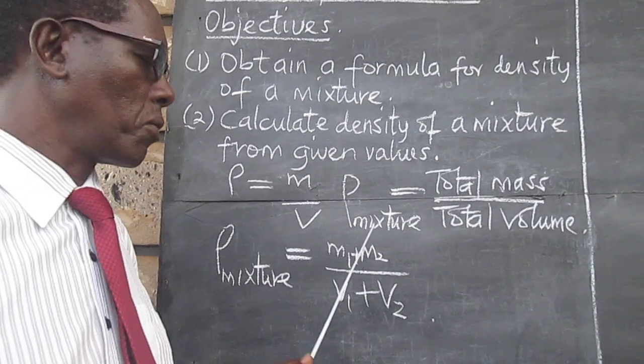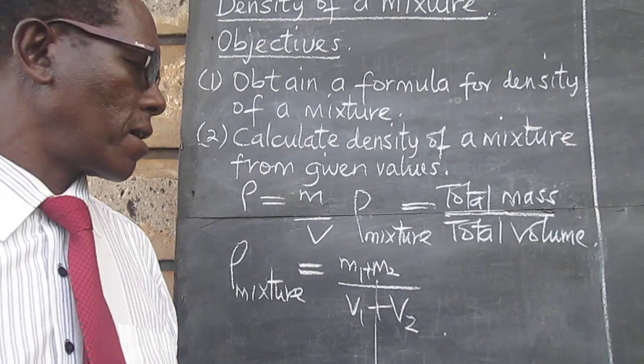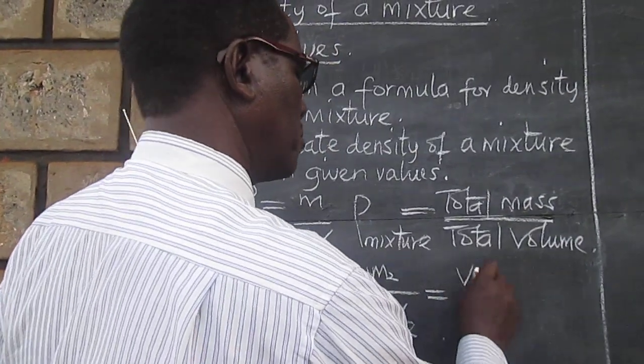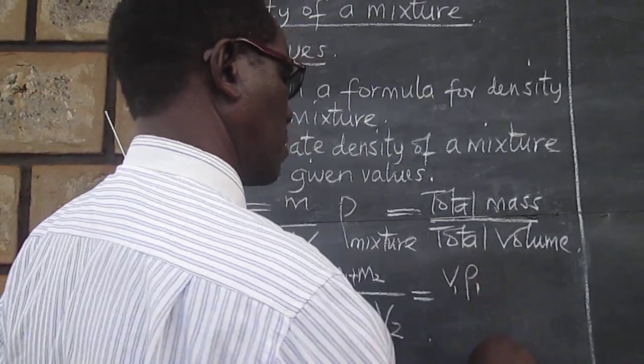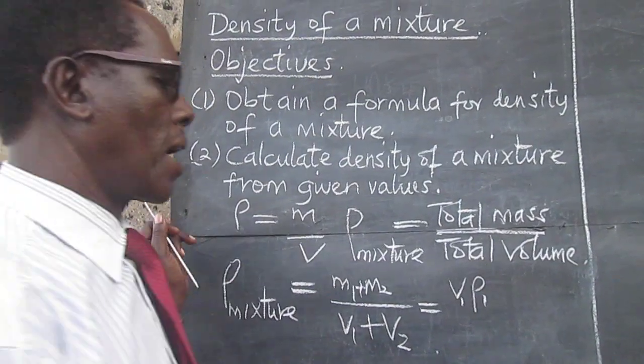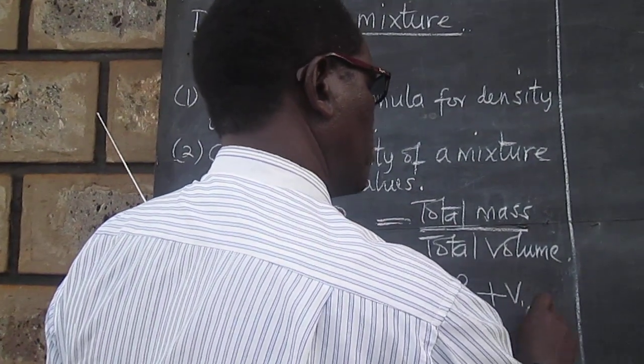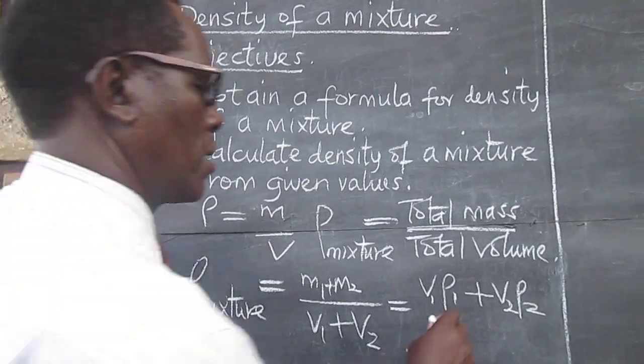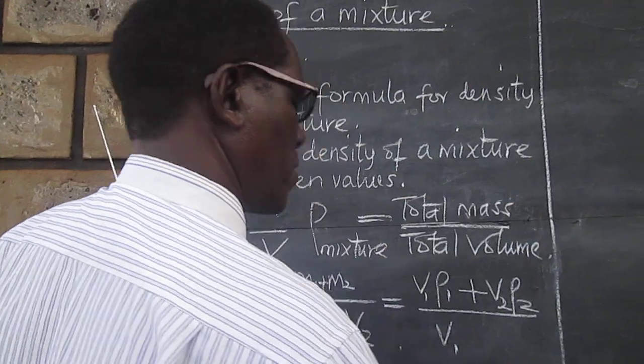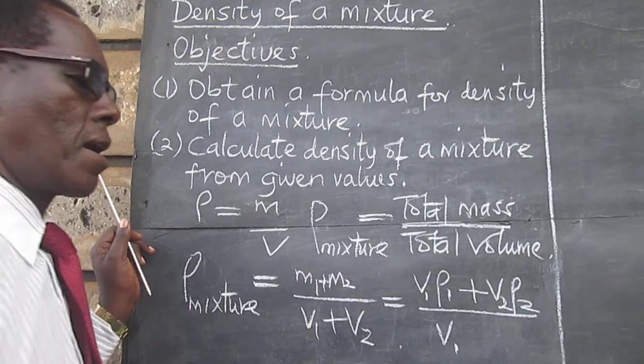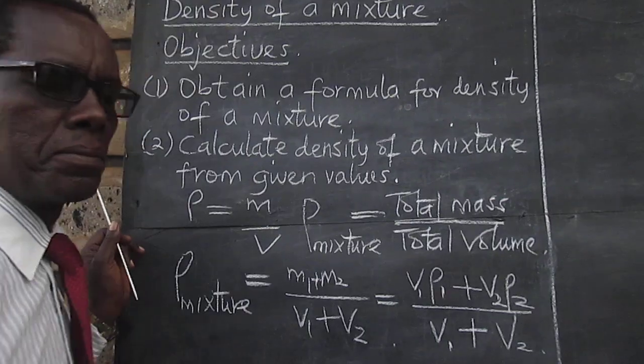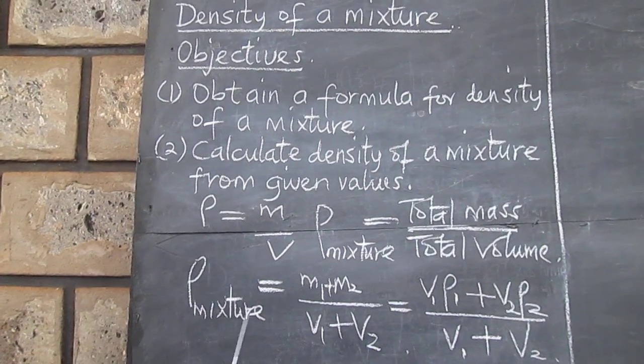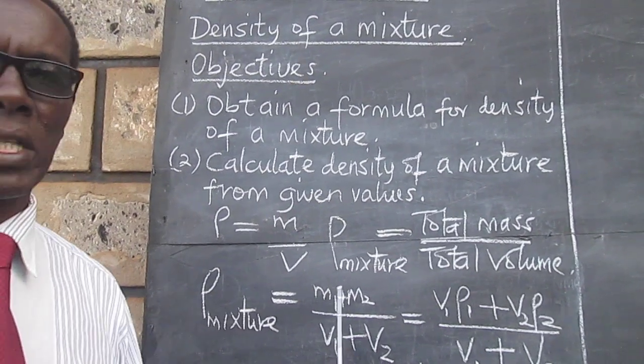And for us to get the mass of the first liquid, we will need to know the volume and the density of that first liquid, and the volume and the density of the second liquid divided by the first volume added to the second volume. So, this formula would give us the density of the mixture.